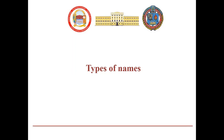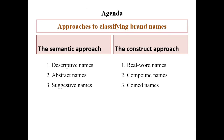Hello and welcome to the second lecture on brand naming. In this lecture, you will learn the types of names and how they are created. We will organize them into two approaches – semantic and construct. Within the semantic approach, we will analyze descriptive, abstract, and suggestive brand names. The naming construct approach will provide insights into real-world, compound, and coined names. Let's get started.